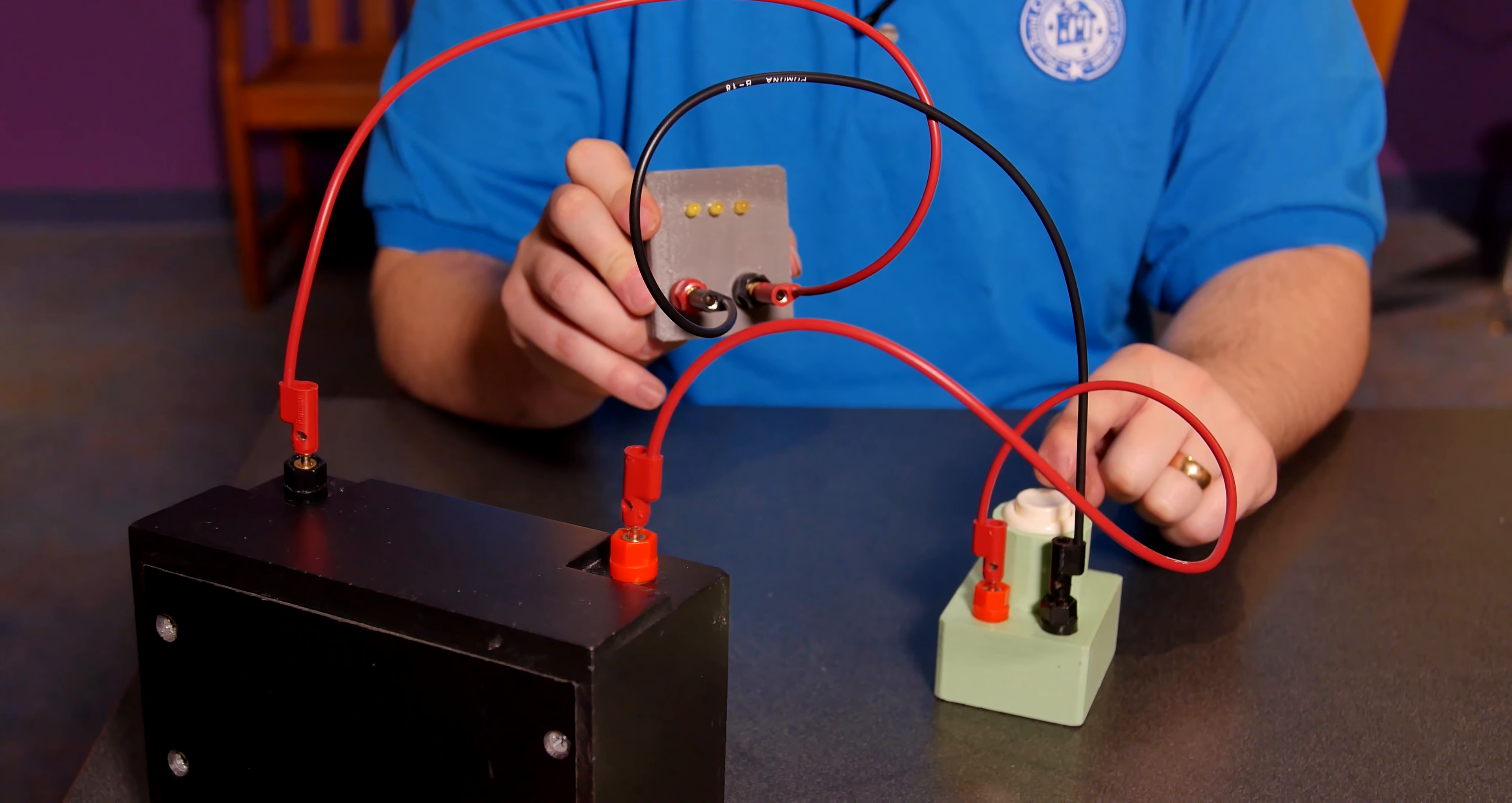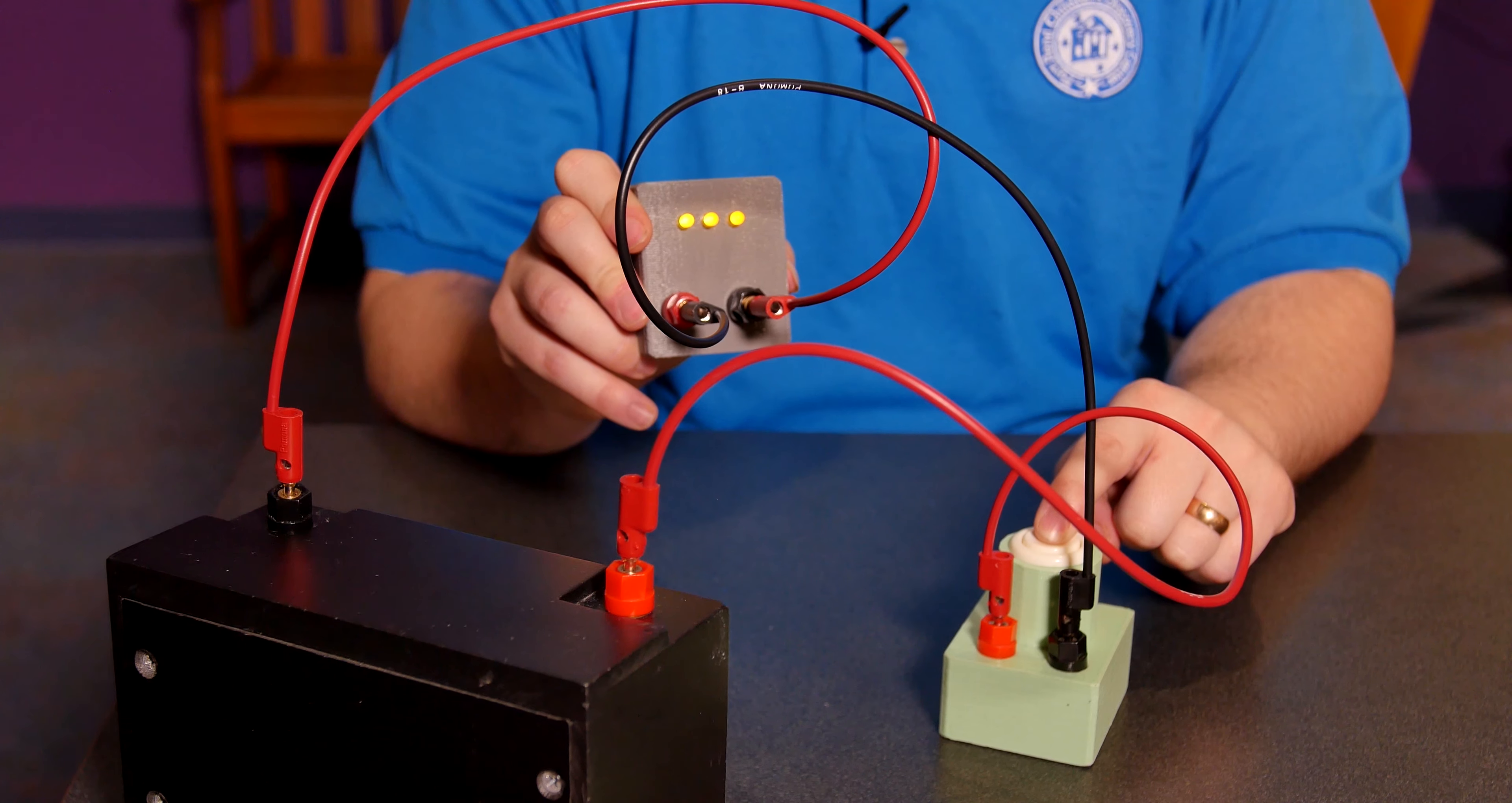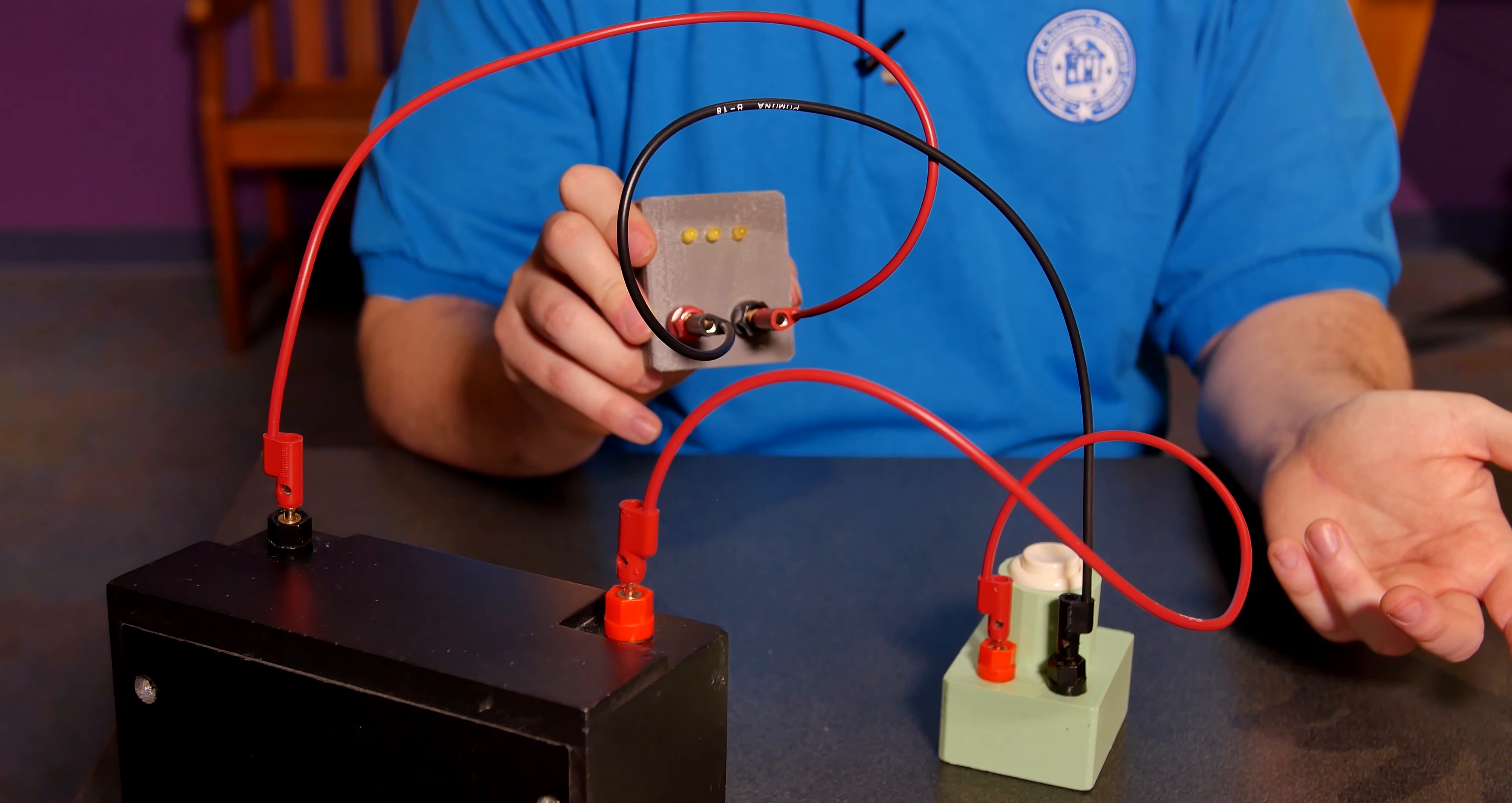So the way that a simple switch like the button works is when you push down that button, it actually puts two pieces of conductive material together and it closes that circuit. It makes the circle complete so that the electricity has places to flow. When you let go of the button, those two pieces of conductive material are apart and the circle is broken.